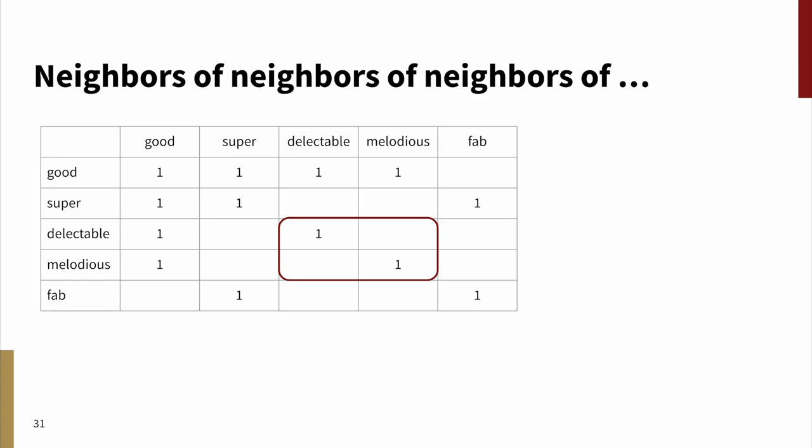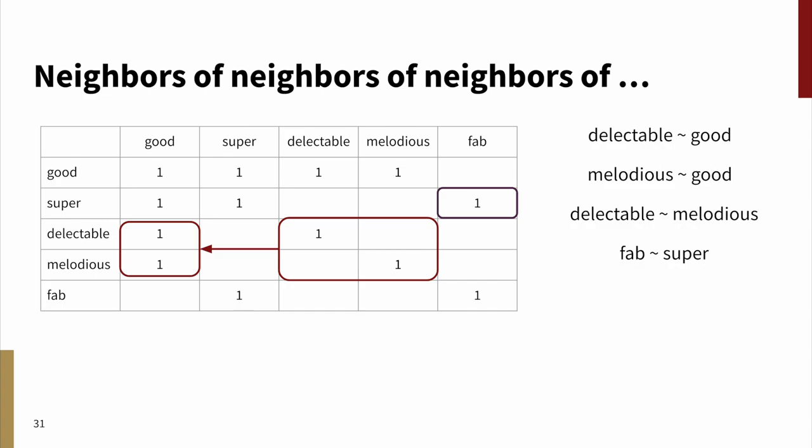Now, in my example, delectable and melodious never co-occur in this hypothetical case. Both are positive, but the first is used in the food domain, let's stipulate, and the second in the music domain. Can we capture their abstract notion of similarity? For modern models, yes. Because both words co-occur with good, they are second-order neighbors of each other, and so that will create some distributional similarity for them. How about fab as in fabulous? It's very informal. It co-occurs directly with super, which is also informal. Super is similar to good, and so fab has similarity to good as well. And as a result, we even get that fab has some similarity to delectable and melodious, which might be a third-order notion of being a neighbor.